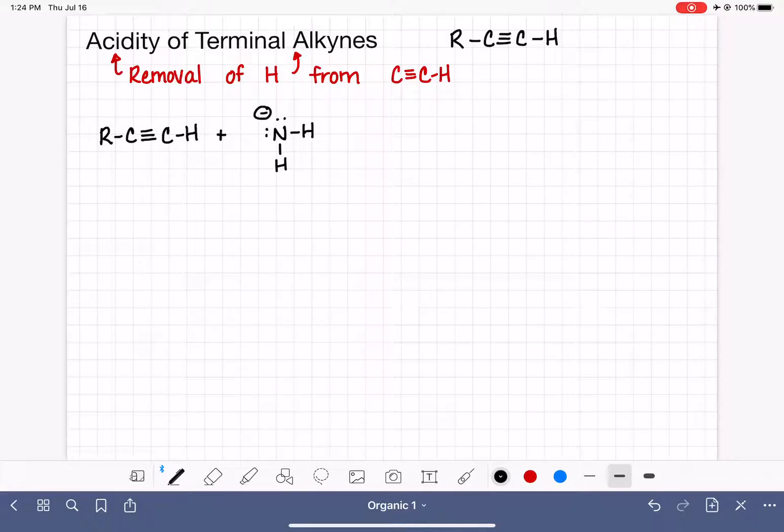One is the amide ion, NH2 minus. I'm going to show you a few more bases that will work as well. In this reaction, the amide ion, because it's such an incredibly strong base, will grab the hydrogen from a terminal alkyne, break the carbon-hydrogen bond, and move the bonding electrons onto the carbon atom as a lone pair. So we end up with an anion, a carbanion.